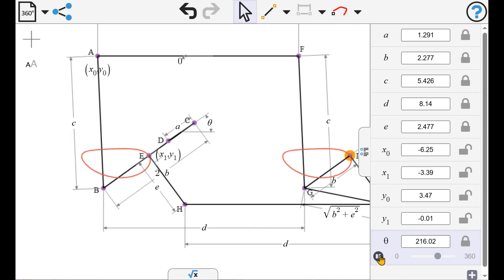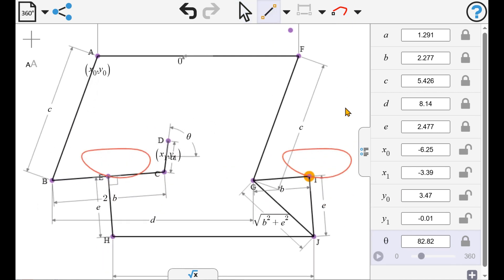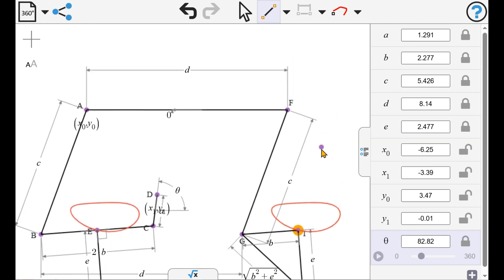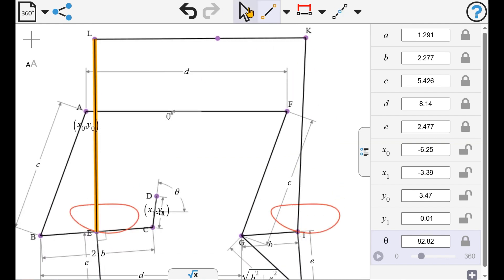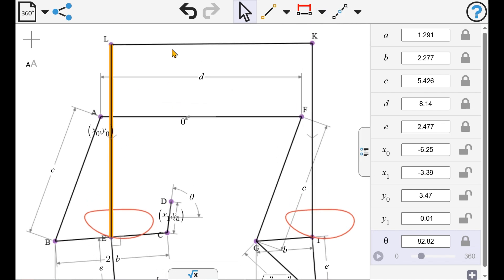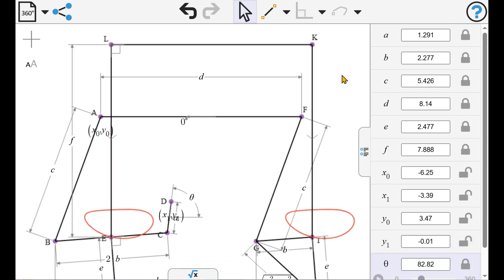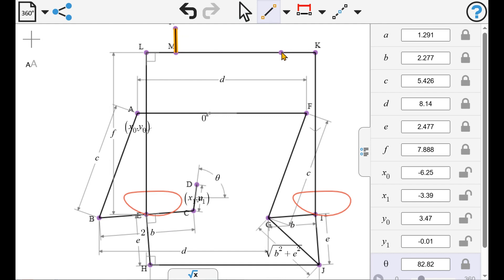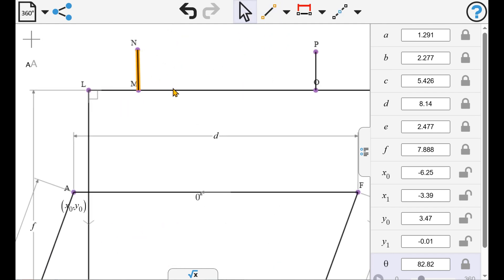And so here are the two points following a translated version of the same curve. And we can now add the end effector and give it a little bit of geometry to suggest its function.